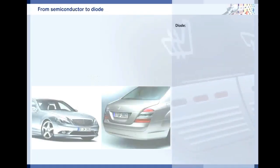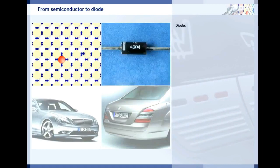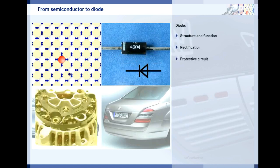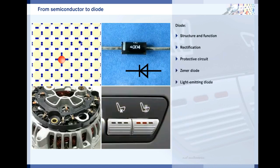A semiconductor alone does not make a semiconductor component. Only when semiconductors are combined do they make components such as diodes. In this section you will see how diodes are made and how they work. You will find out how they are used as rectifiers and in protective circuits. You will also get to know special types of diode such as Zener and light emitting diodes.